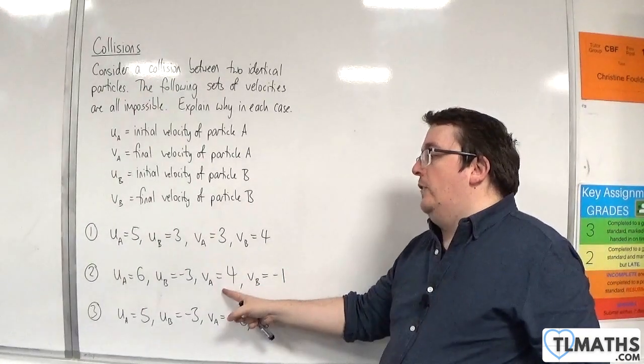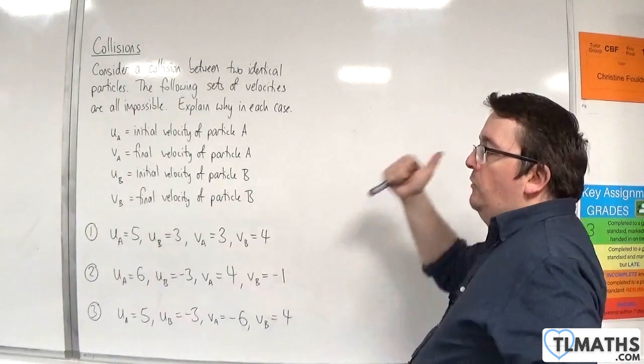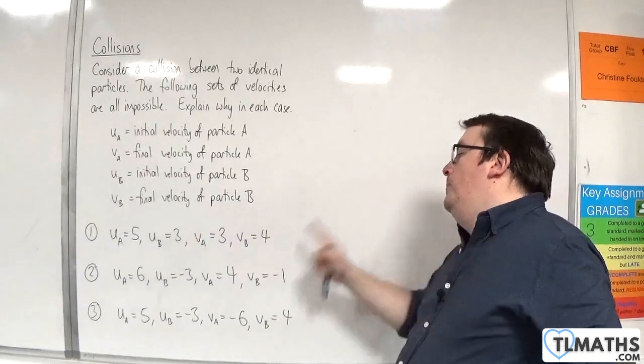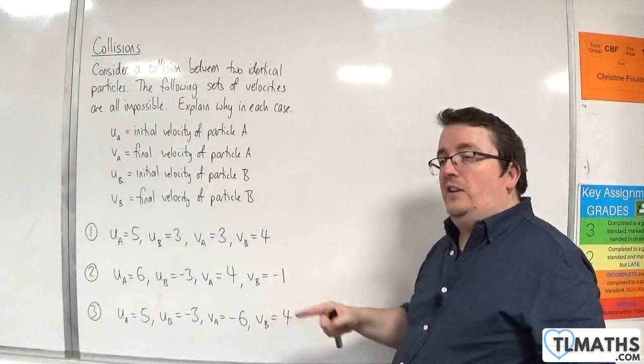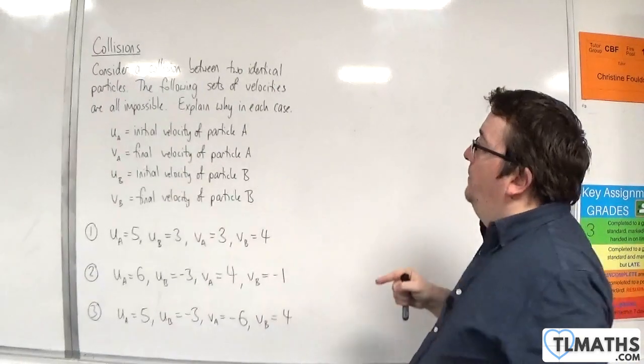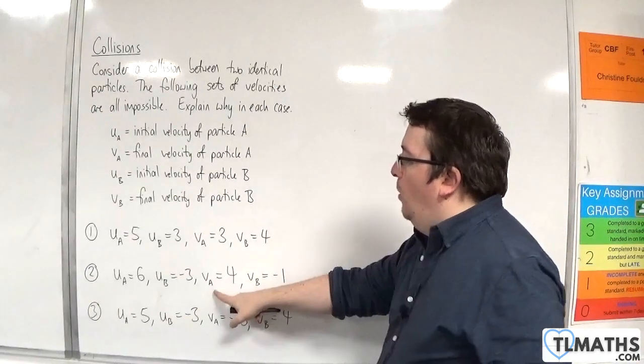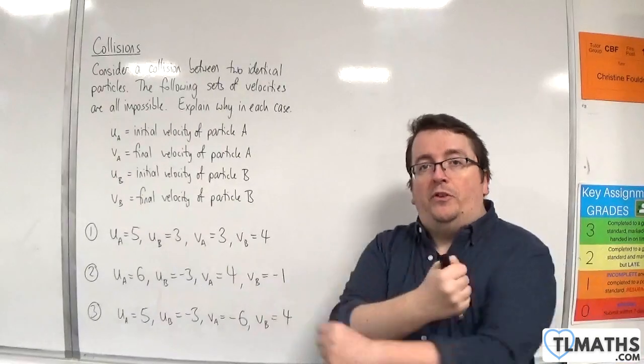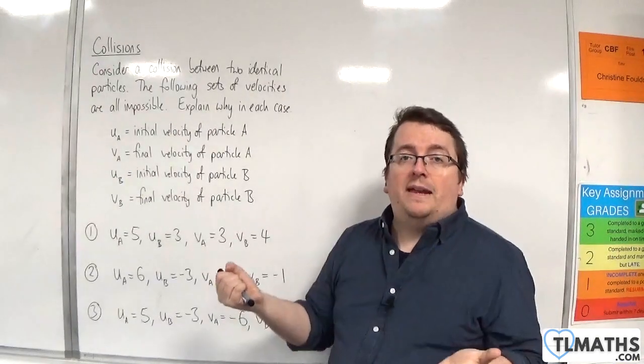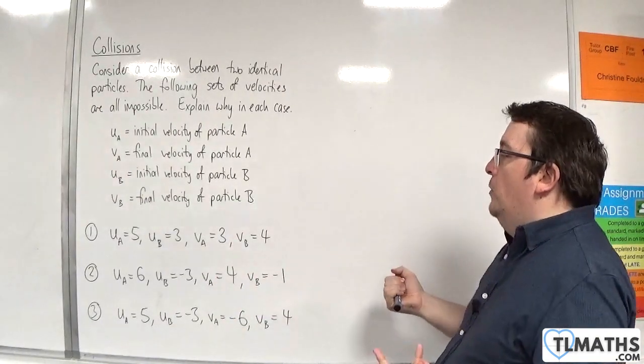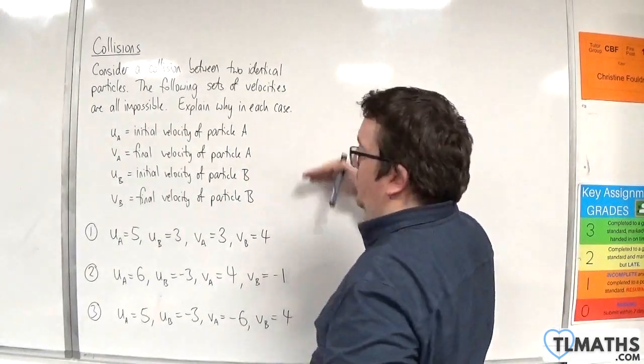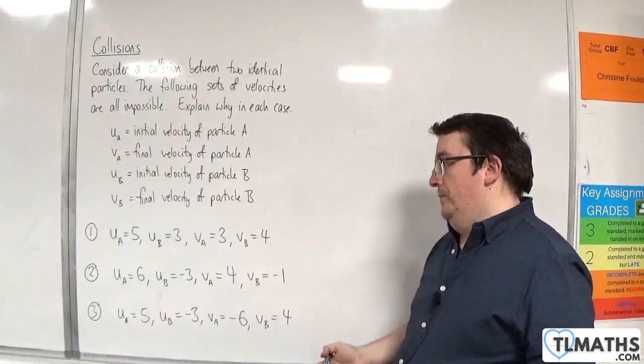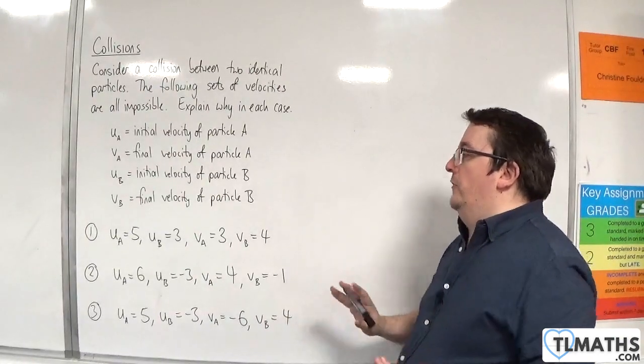Then the final velocity of A is 4 meters per second, so it continues to the right. But B doesn't change direction and keeps going to the left at 1 meter per second. That would require both A and B to switch positions, which obviously doesn't make any sense. A continues to the right, but B continues to the left even after the collision. That's nonsense. That can't happen.